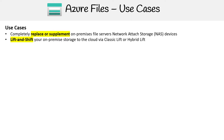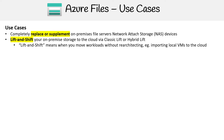If you're performing a lift and shift — that's when you're moving data to the cloud — you can use Azure Files for that. Azure defines two different kinds of lifts: a classic lift and a hybrid lift. In a lift and shift, you move workloads without re-architecting.